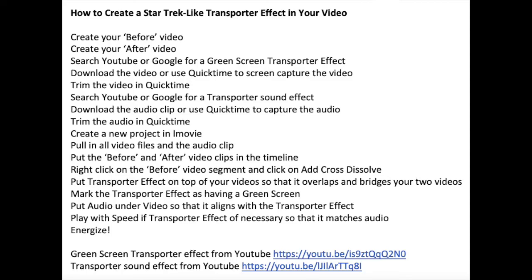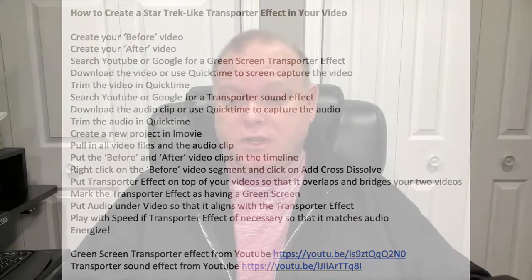Right-click on the before video segment and click on Add Cross Dissolve. Put the transporter effect on top of your videos so that it overlaps and bridges your two videos. Mark the transporter effect as having a green screen. Put the audio under the video so that it aligns with the transporter effect. Play with the speed of the transporter effect if necessary so that it matches the audio, and then energize. Here I also show you the green screen transporter effect from YouTube that I used and the transporter sound effect.